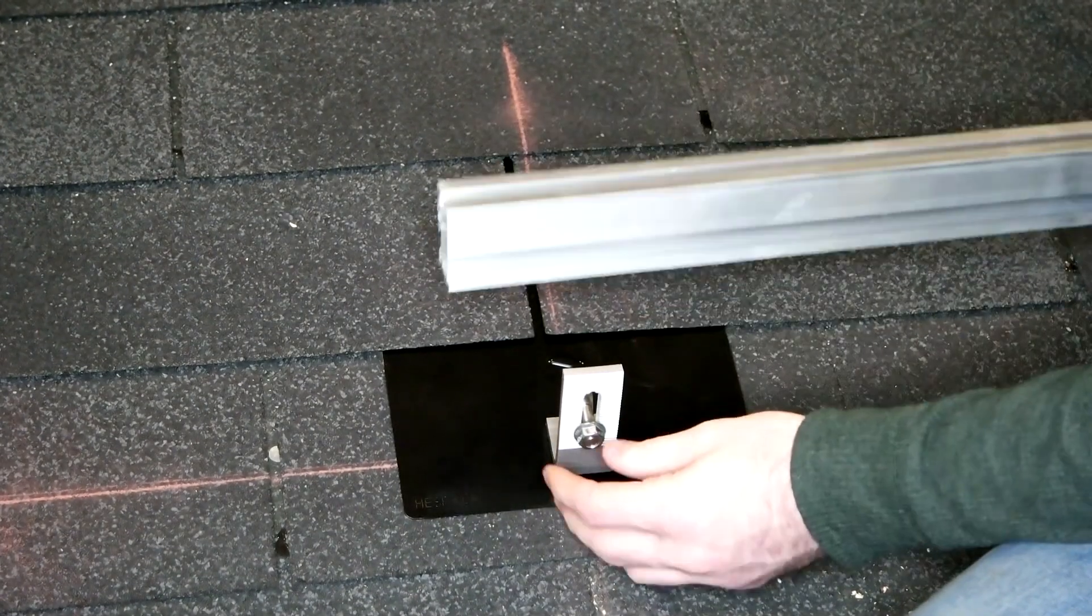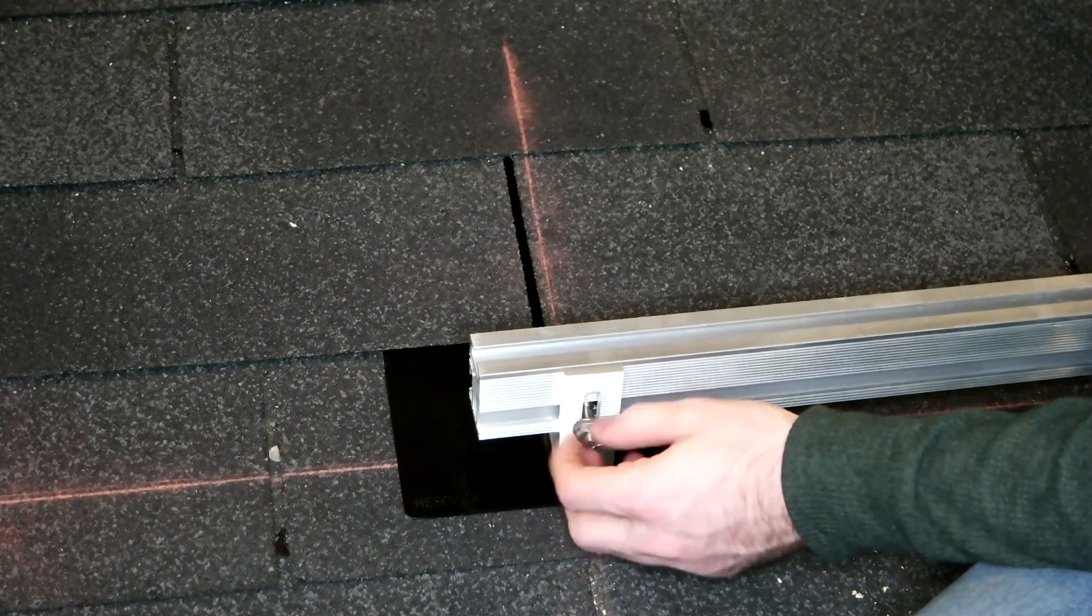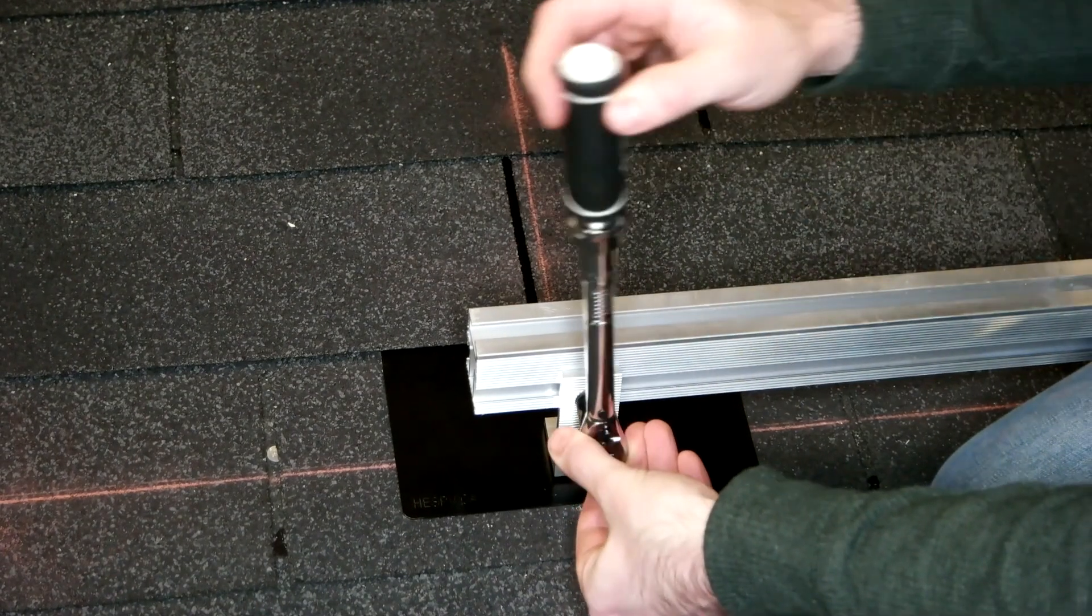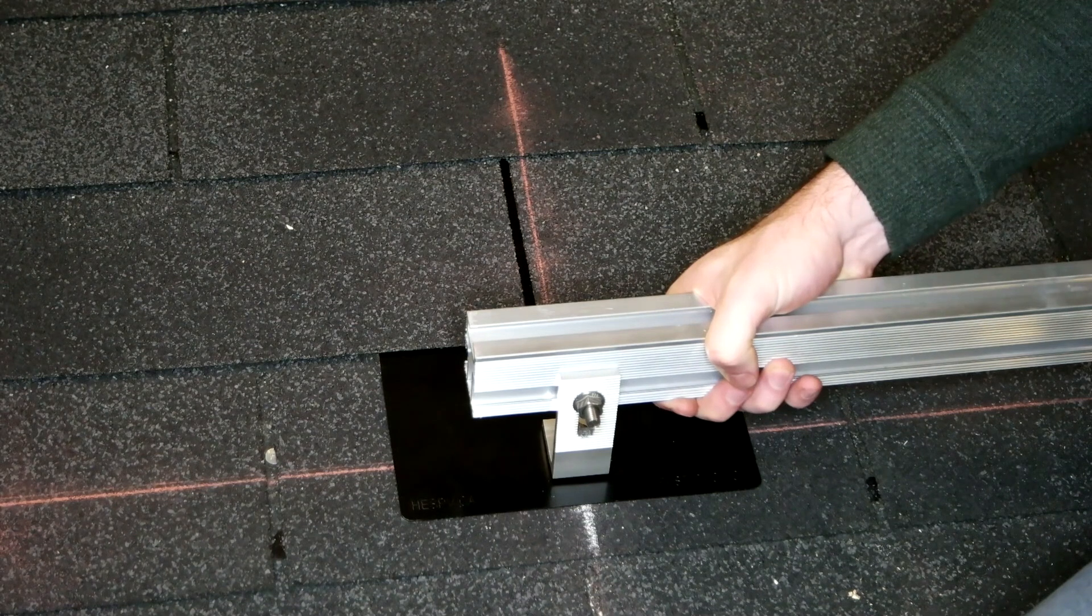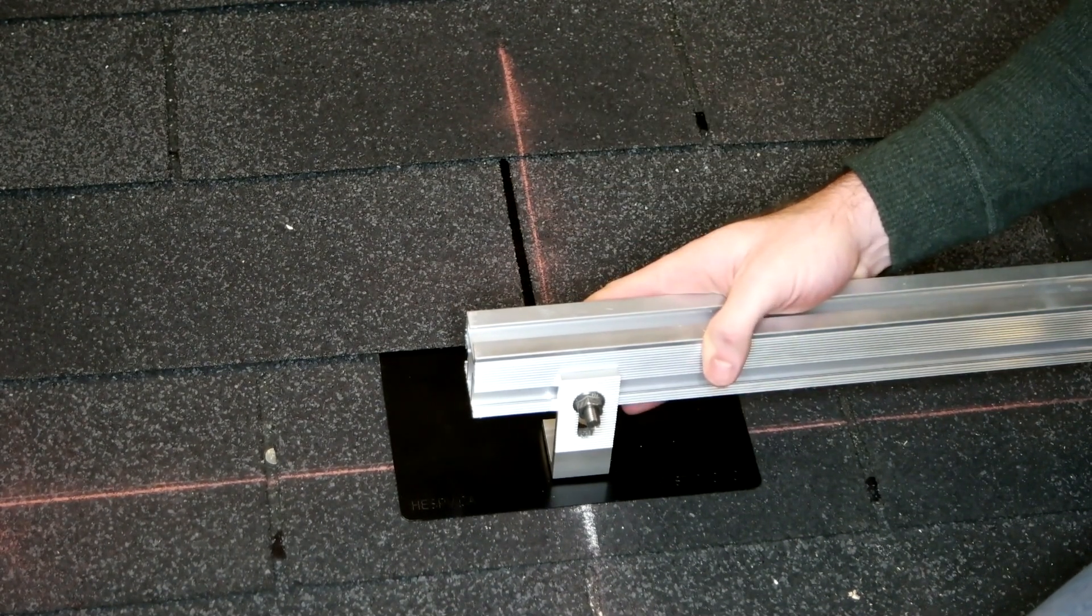Now that we have our feet in place, we can attach our rail using the supplied hardware. All we do is line up the channel with the rail, tighten to the proper torque specifications, and we're done. So now that we have our racking in place, we can give it a tug, it's not going anywhere, and we can go ahead and install the rest of our system.